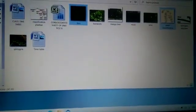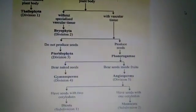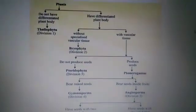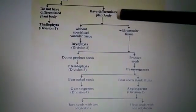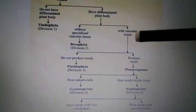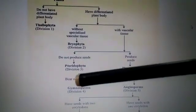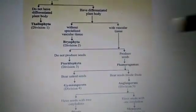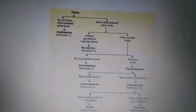Now after Pteridophytes comes Gymnosperms. For Gymnosperms, first point: plant body is differentiated into root, stem and leaves. Vascular tissues are present. They produce seeds, but the seeds are naked — they are not enclosed inside fruits.